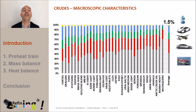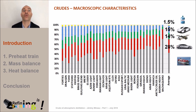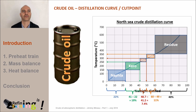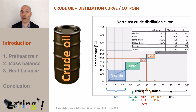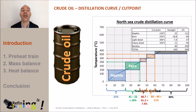The average naphtha content is about 15%, kerosene about 14%, diesel about 28%, and finally residue represents about 42%. Let's now take the example of a refinery that would process 500 tons per hour of crude oil. With the cut points selected before, we can produce 112 tons per hour of naphtha, 94 tons per hour of kerosene, 37 tons per hour of light diesel, 56 tons per hour of heavy diesel, and finally 200 tons per hour of atmospheric residue.